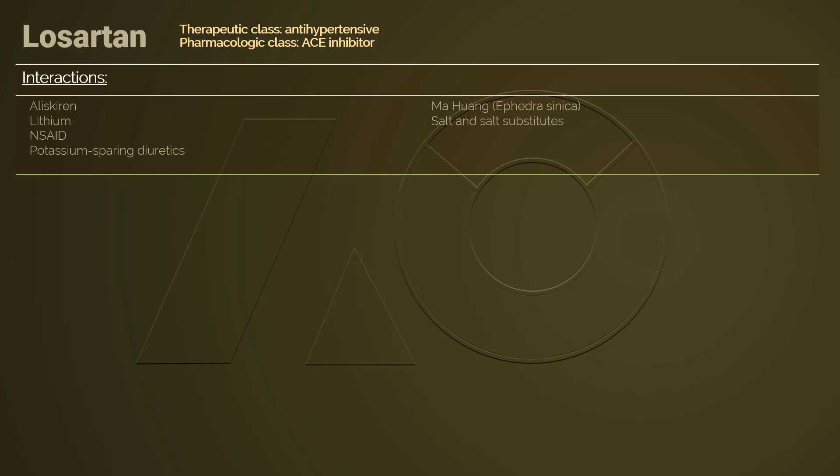Four major drug-to-drug interactions to note with Losartan are aliskiren, lithium, NSAIDs, and potassium-sparing diuretics. Using potassium-sparing diuretics in combination is not recommended because it increases the risk for hyperkalemia. NSAIDs can decrease the antihypertensive effect of Losartan. When using lithium and Losartan together, the patient is at risk for lithium toxicity.